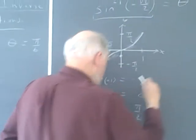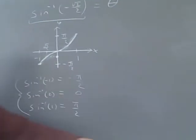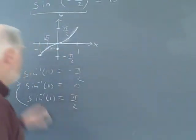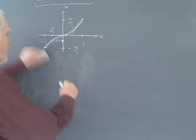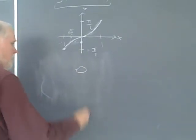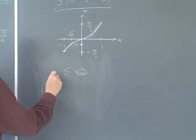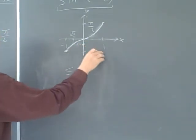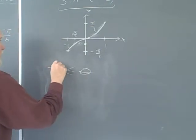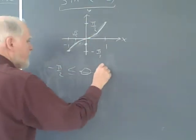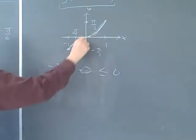And I see that my theta is between negative pi over 2 and 0. So my theta is greater than or equal to negative pi over 2 and less than or equal to 0. It's trapped between here and here.